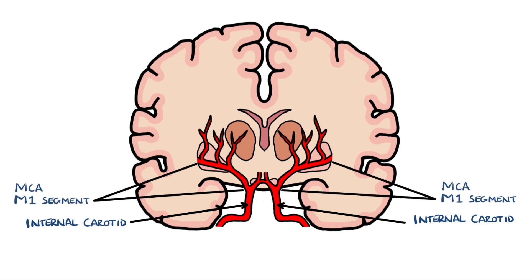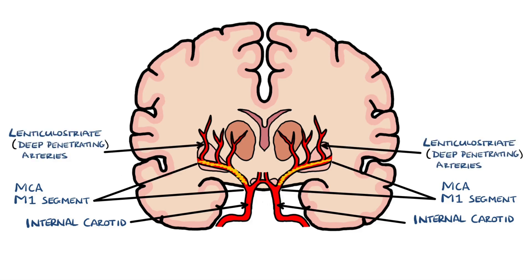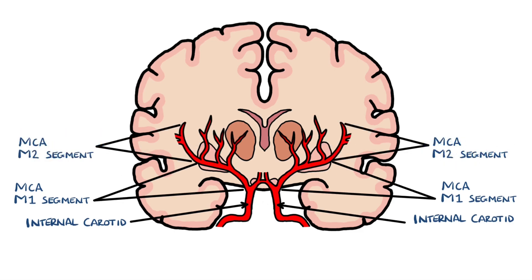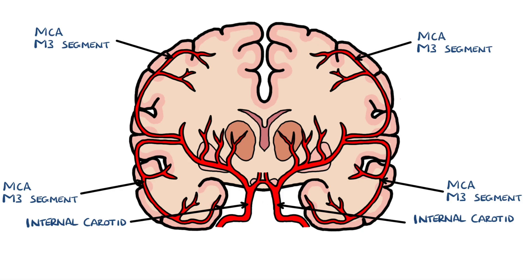The segments are the M1, or horizontal segment, which is the most proximal part and gives off lenticulostriate arteries — deeper penetrating arteries that supply the basal ganglia and surrounding region. The M2 segment, known as the sylvian segment, typically includes a bifurcation into superior and inferior segments. M3 segments are cortical segments supplying the cortex.